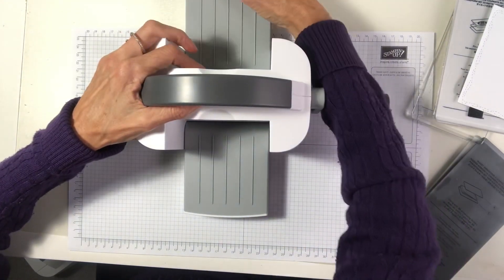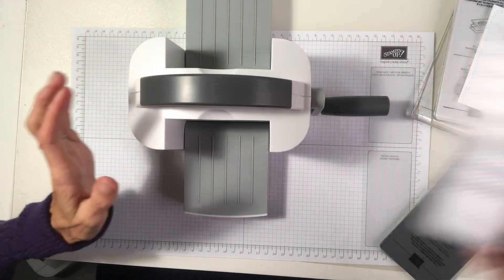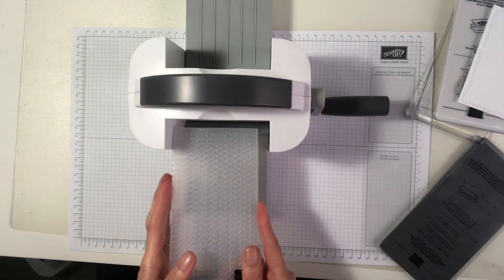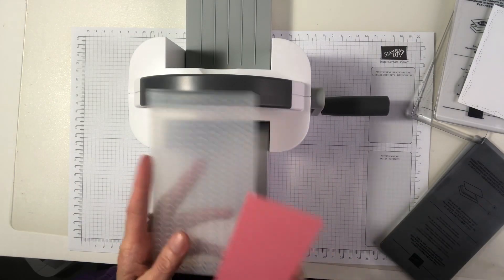We're going to get some card. Now I'm using the greenery embossing folder. It's one of the narrow ones so it will easily run through.